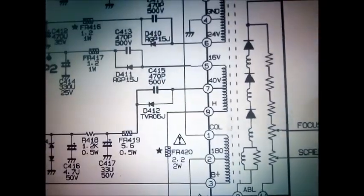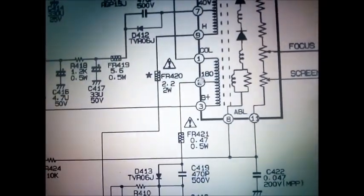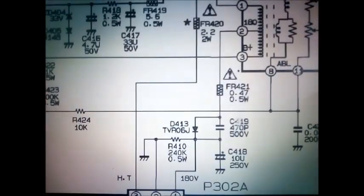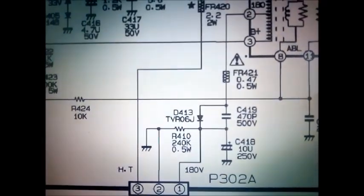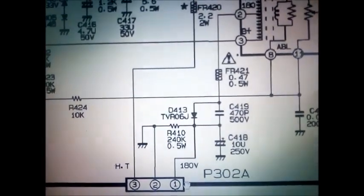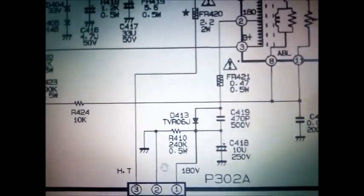This 180V pin number 2 goes to this diode through this port, and this port is connected with the picture tube.